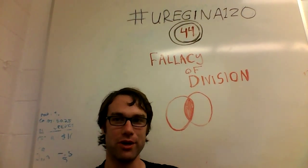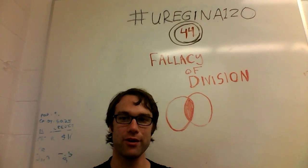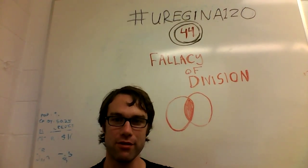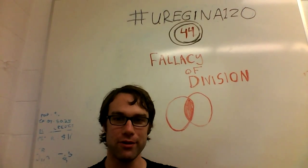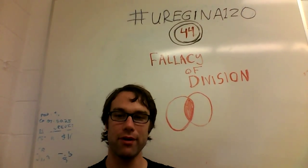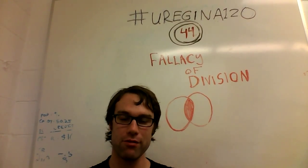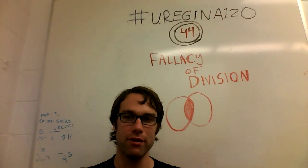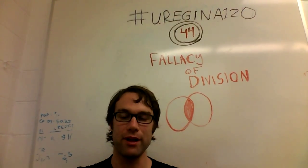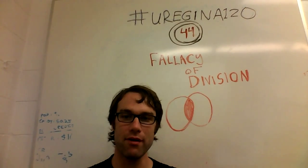Welcome back to URegina 120. I'm Jeff Cliff, and this is a series of 120 videos of things that I learned as a student at the University of Regina, and that I think you should know. Today we're going to be talking about one of two fallacies that are intricately related, and the next video will be the other. This is the fallacy of division — an informal fallacy that relates between the properties of a whole and the properties of the parts of a whole.